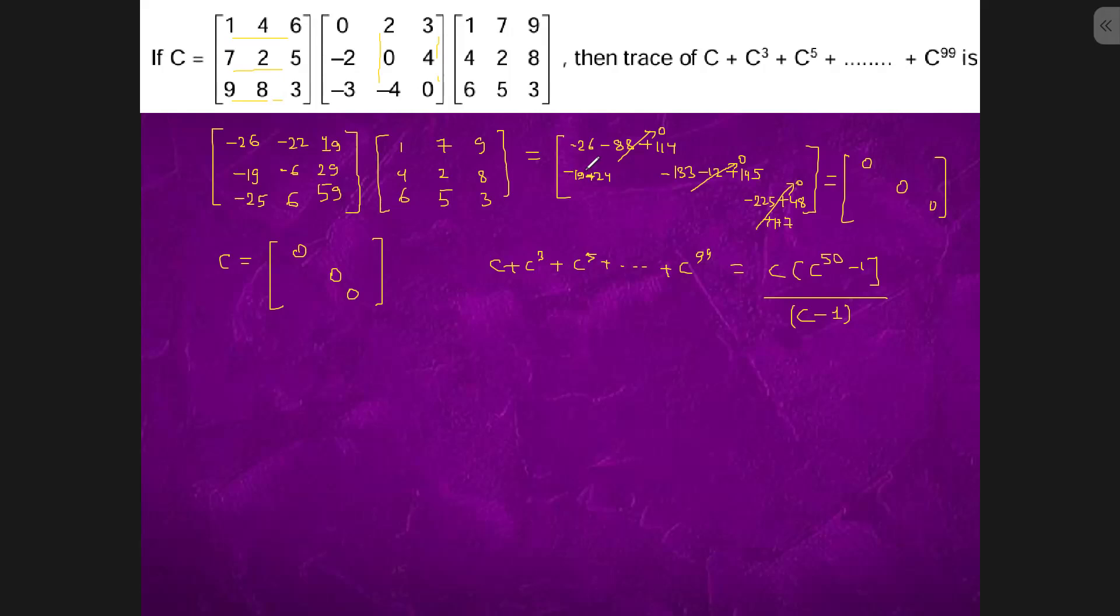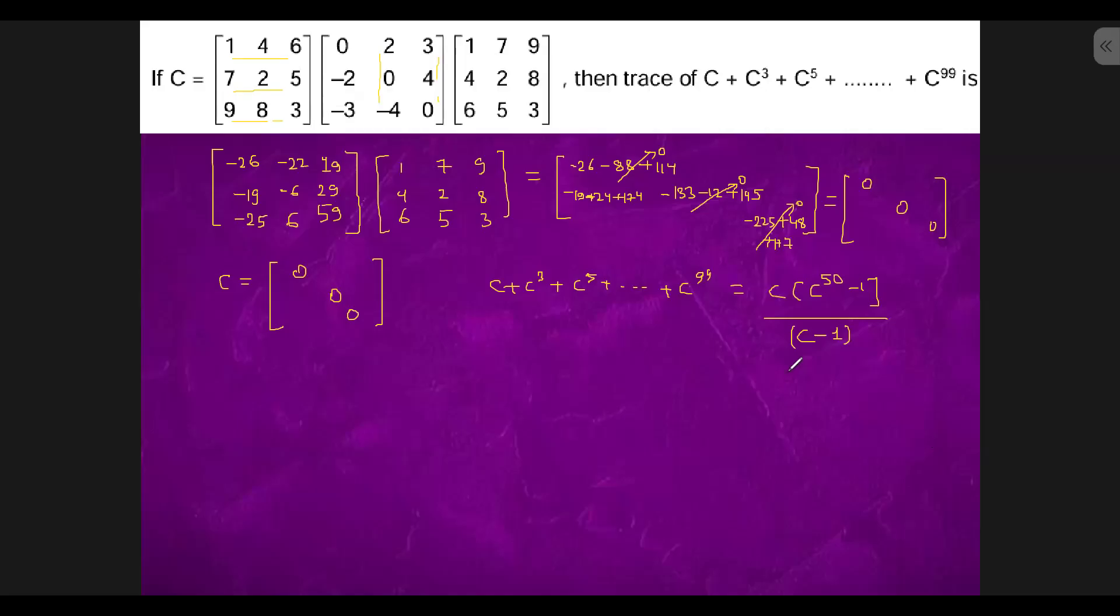If we know the trace of C is 0, and trace of C² is also 0, and trace of C³ is also 0, so trace of C³ will come out to be 0. Similarly, trace of C⁵ will